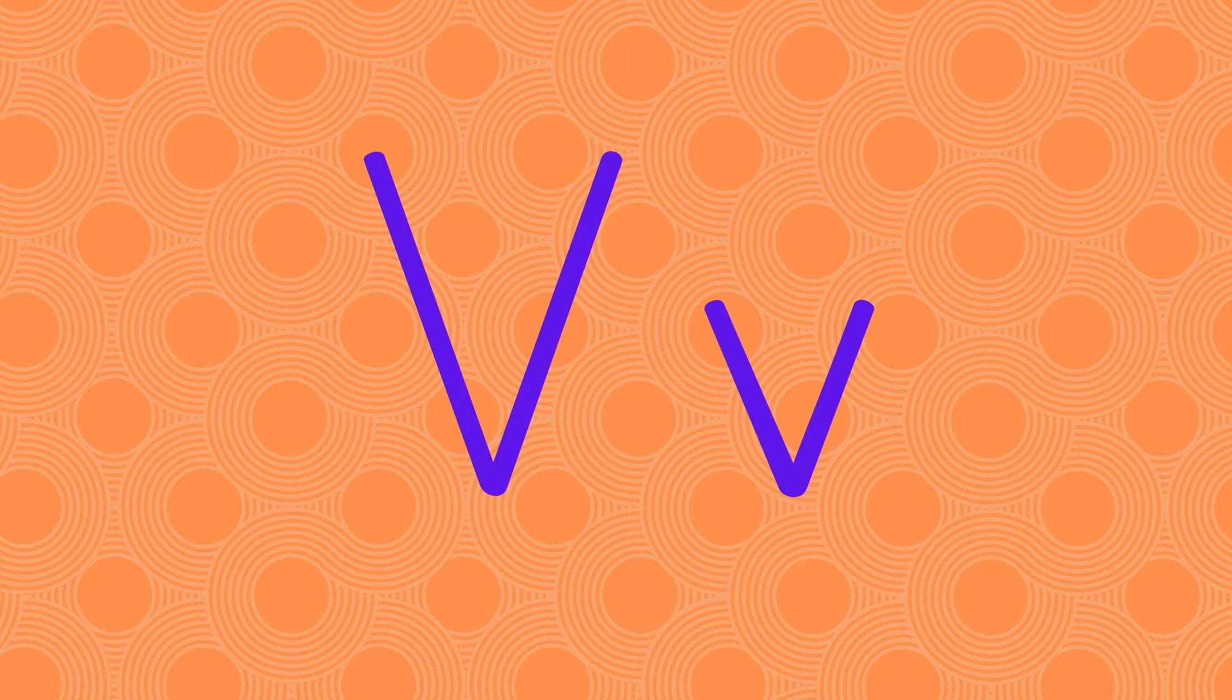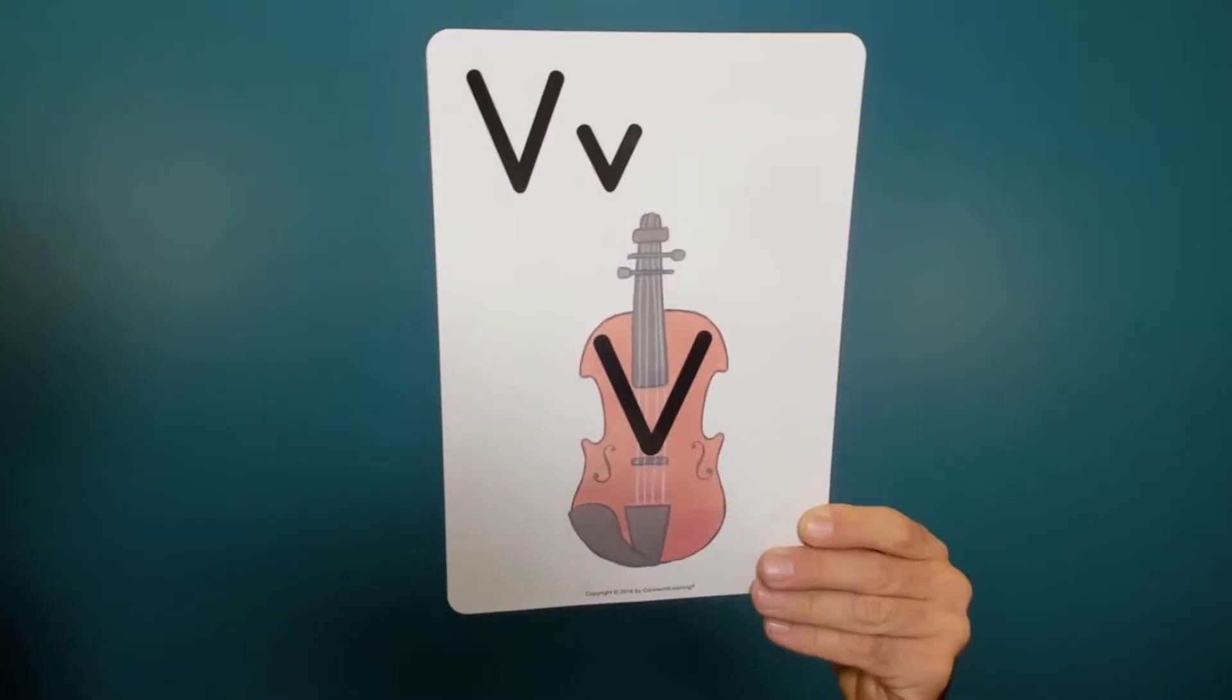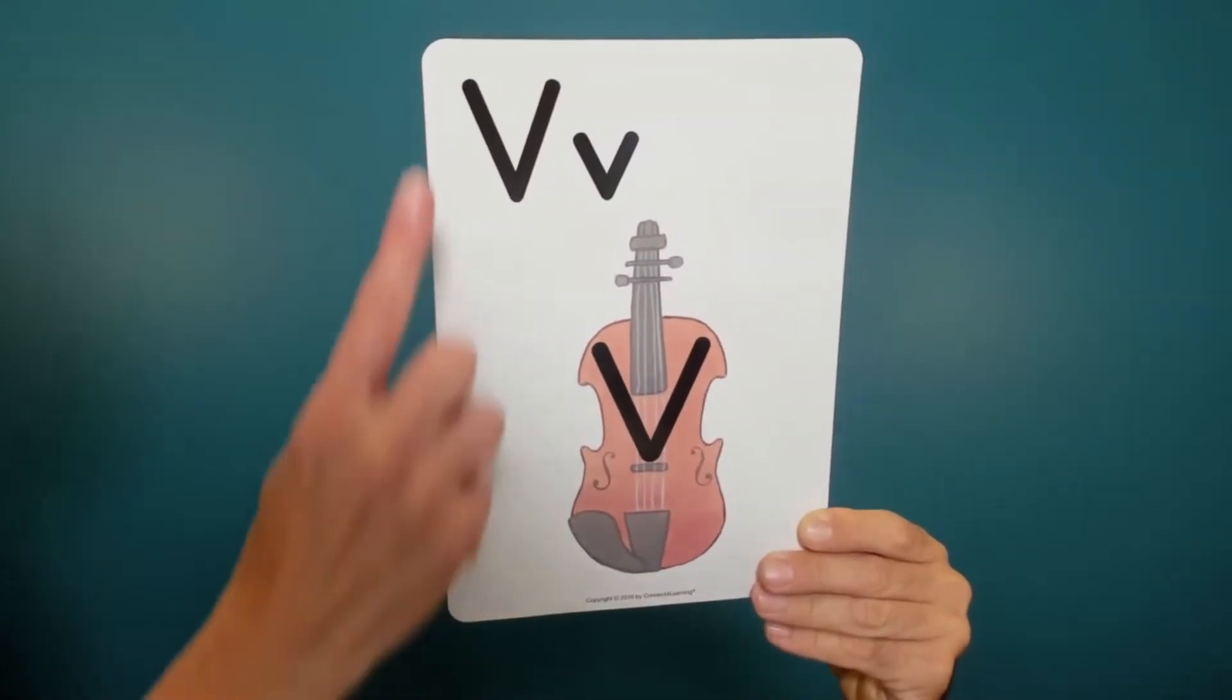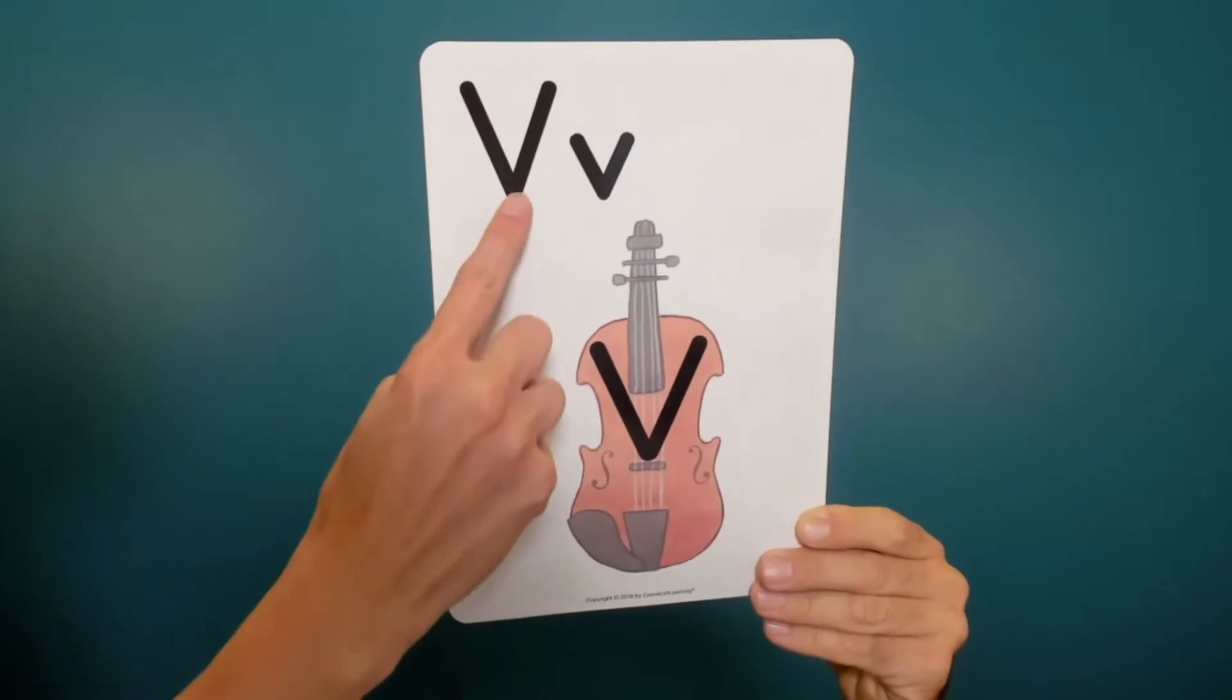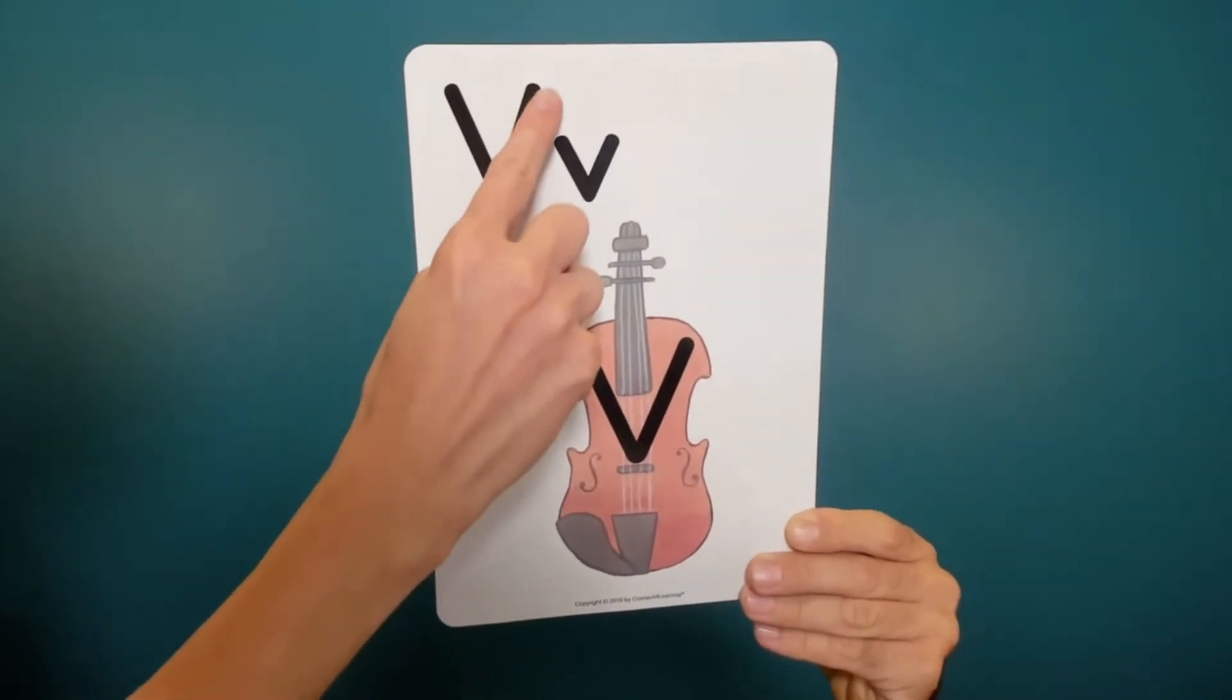Now let's try to draw the letter V. The upper case V. Big line down to the right, then big line up to the right.